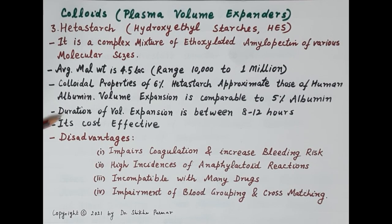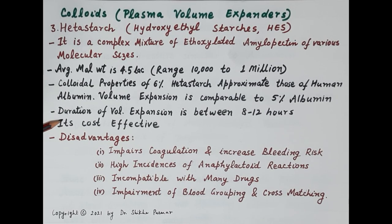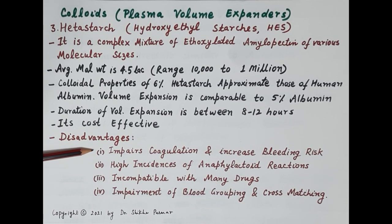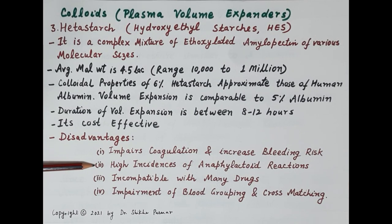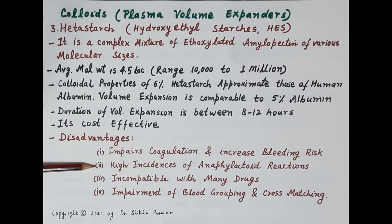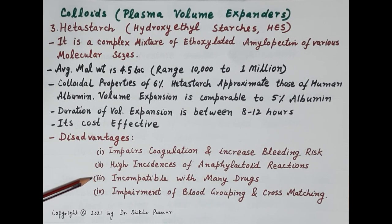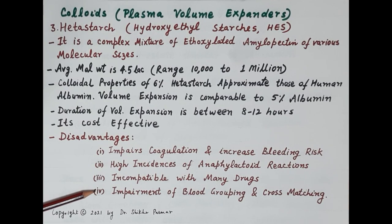Hetastarch is cost-effective as it is cheaper than human albumin. Regarding disadvantages, hydroxyethyl starch impairs coagulation and thus increases the risk of bleeding. Hetastarch is associated with a higher risk of anaphylactoid reactions compared to human albumin and other synthetic colloids. It is incompatible with many drugs, so no injectables should be added to its infusion. It also impairs blood grouping and cross-matching.